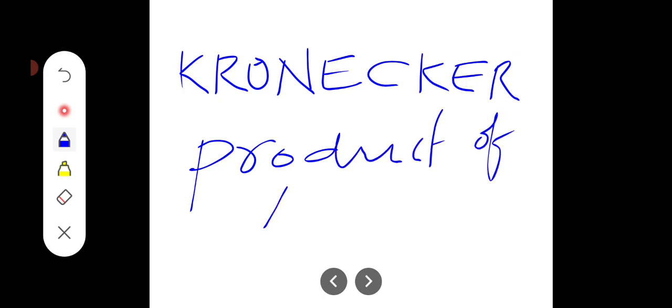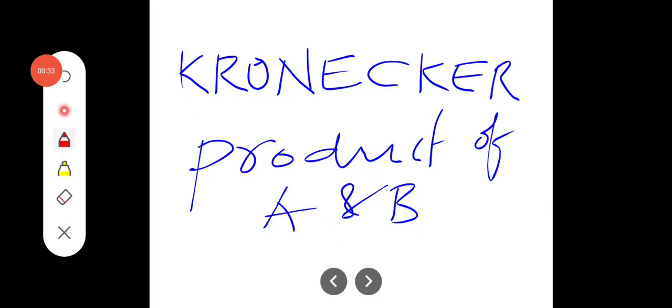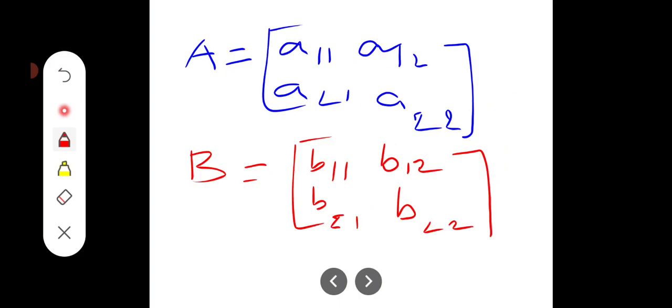The Kronecker product of A and B matrices - suppose if you are taking two matrices, what is the Kronecker product of these two? Let us see. I will take two matrices. A is equal to A11, A12, A21, A22 are the elements, and B is equal to B11, B12, B21, B22 are the elements.